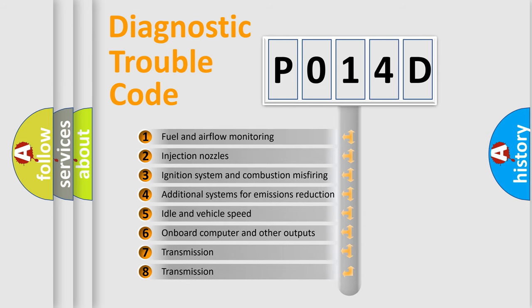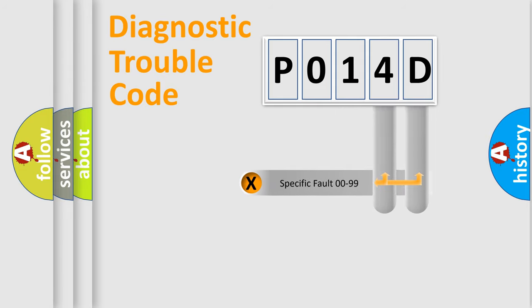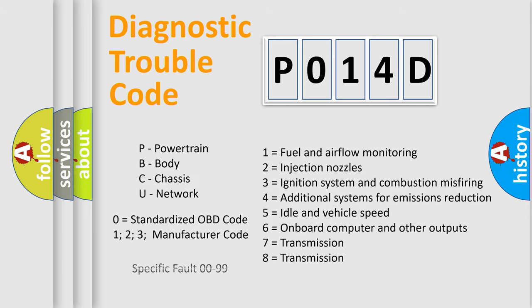The third character specifies a subset of errors. The distribution shown is valid only for the standardized DTC code. Only the last two characters define the specific fault of the group. Let's not forget that such a division is valid only if the second character code is expressed by the number zero.